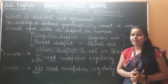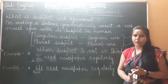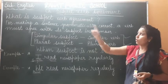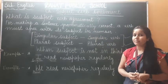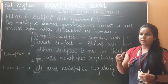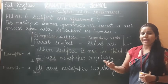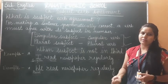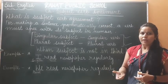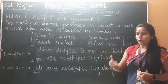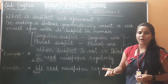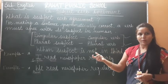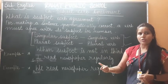So in this lesson, we have understood what is subject and what is verb, and how to identify them. To identify subject, ask: who is performing the action? — the answer is subject. To identify verb, ask: what is the subject doing? — the answer is the verb. And we have understood what is subject-verb agreement.